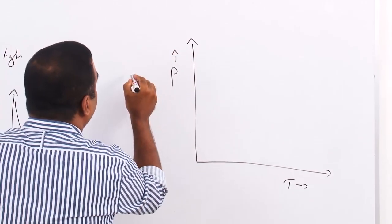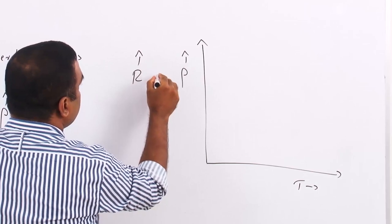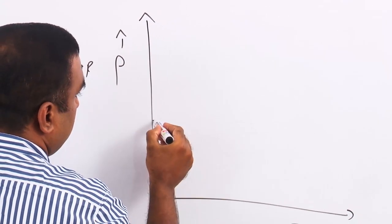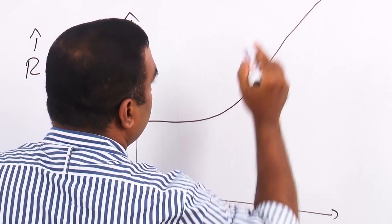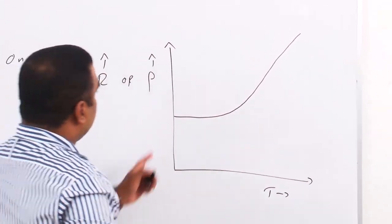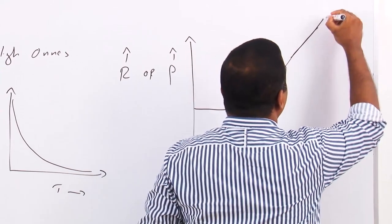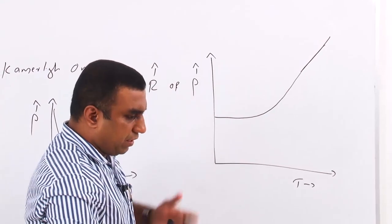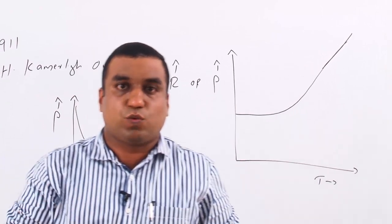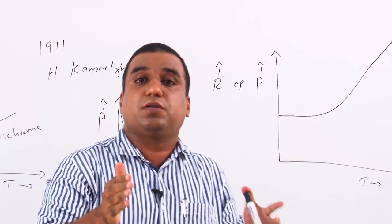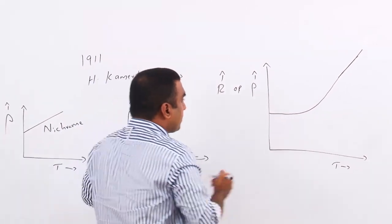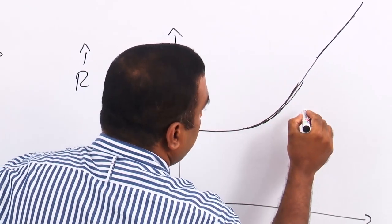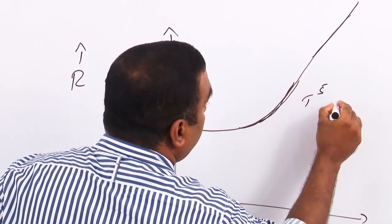What is the case when we take normal metals? The variation of resistivity or resistance with temperature in the case of normal metals is like this. At higher temperatures, the resistance or resistivity varies in a linear manner. We can see this type of variation in most metals, especially in the case of platinum — that's why we use platinum in a platinum resistance thermometer. As temperature decreases, we can see a T-raised-to-5 dependence.